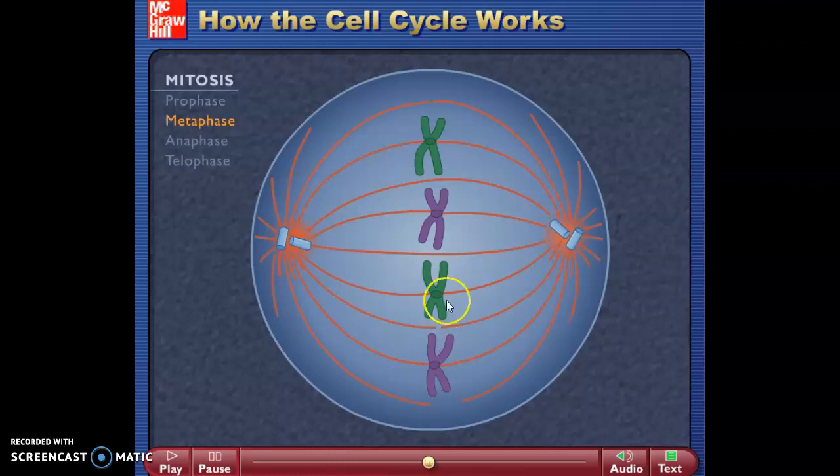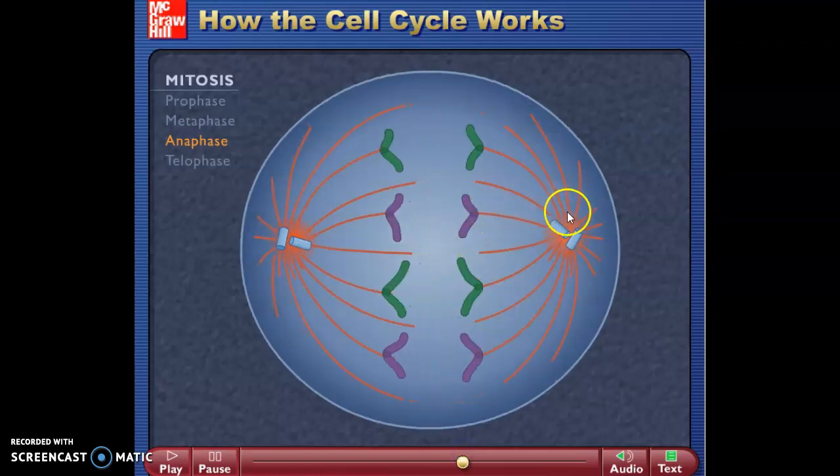Anaphase, now the tug-of-war begins, where the centrioles start to pull back on the spindle fibers, and they're going to rip these sister chromatid pairs in half. Where just one half of the X goes one direction, and the other half goes the other. Sister chromatid pairs no longer exist now. Now I can just call these either chromosomes or chromatids, which again is just a copy of a chromosome. So now my count is one, two, three, four, five, six, seven, eight chromosomes, or eight chromatids.